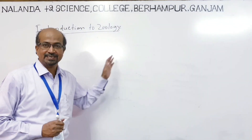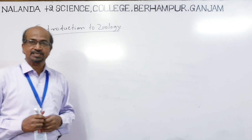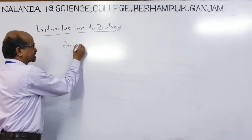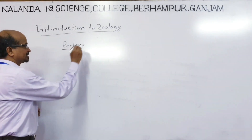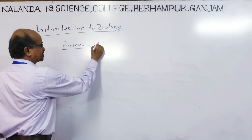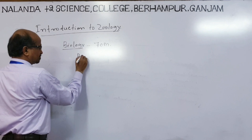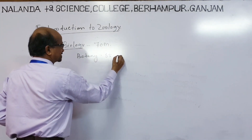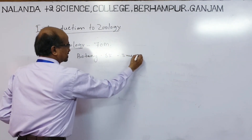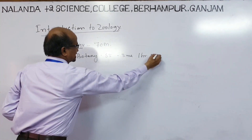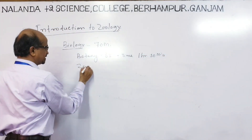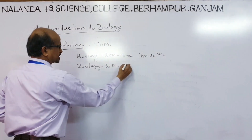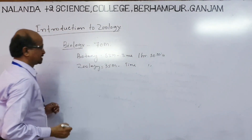Before going to the Geology class, let us know the mark patterns in the Geology subject. In Biology, we give you a split: Botany is 70 marks total. Here Botany will give 35 marks with a time period of 1 hour 30 minutes, and Geology also 35 marks with 1 hour 30 minutes.